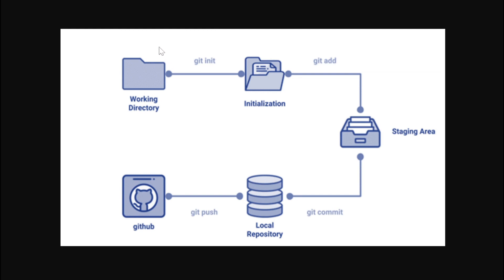Working directory is nothing but how we create and work in our project files — that is known as the working directory. Next, we do git initialization. This is the command for initialization for Git. We will run this command, and in the project, an empty repository will be created. And next, we will create files, and the files will move to the staging area.